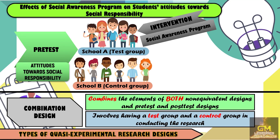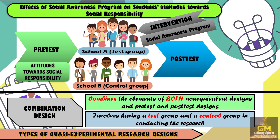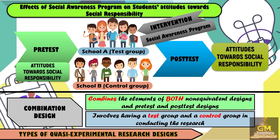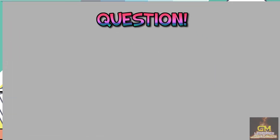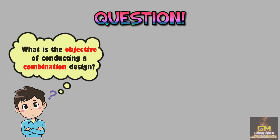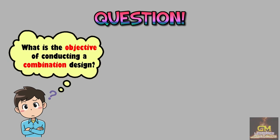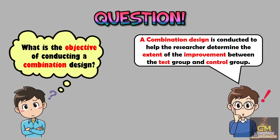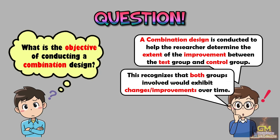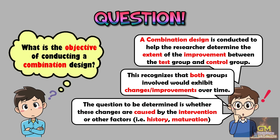After the intervention has been given, both the test group and control group will have the post-test in order to identify if there are changes in the attitudes towards social responsibility. Now, before we end, we're going to answer one last question: What is the objective of conducting a combination design? A combination design is conducted to help the researcher determine the extent of the improvement between the test group and the control group. This recognizes that both groups involved would exhibit changes or improvements over time. However, it is worth noting that the question to be determined is whether these changes are caused by the intervention or other factors, such as history or maturation.